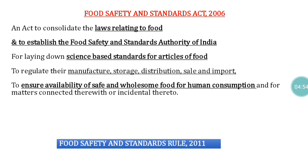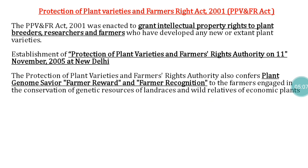In line with the Food Safety and Standards Act 2006, the Food Safety and Standards Rules were also issued in 2011. The Protection of Plant Varieties and Farmers Rights Act 2001, called PPVFRA in short, was enacted to grant intellectual property rights to plant breeders, researchers, and farmers who have developed any new or extant plant varieties.